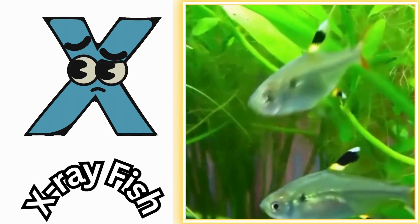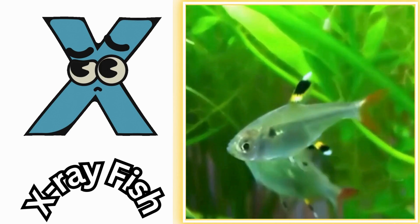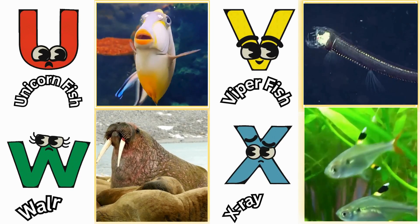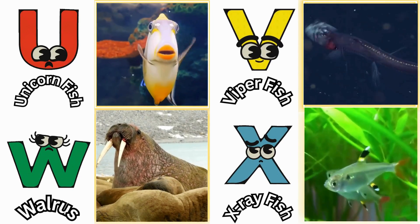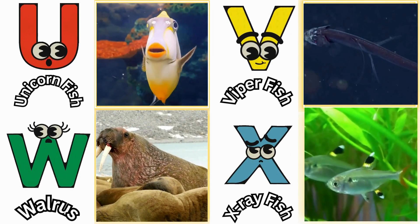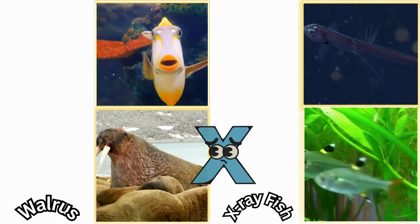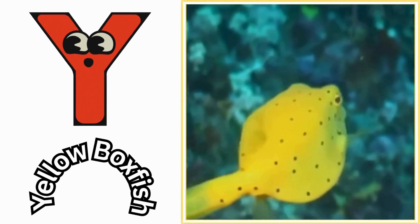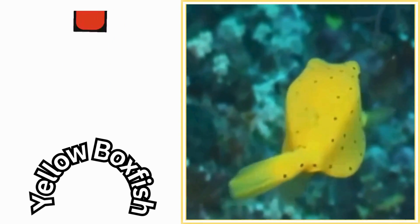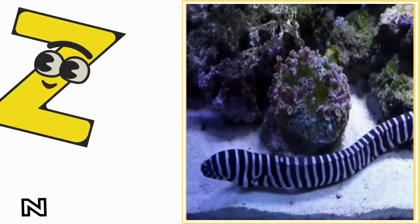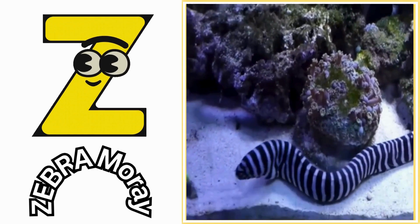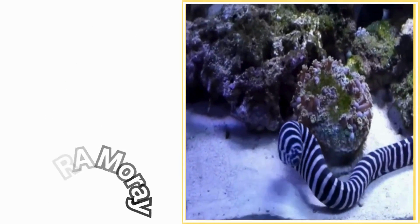X is for x-ray fish. X, x-ray fish. Y is for yellow boxfish. Y, yellow boxfish. Z is for zebra moray. Z, zebra moray.